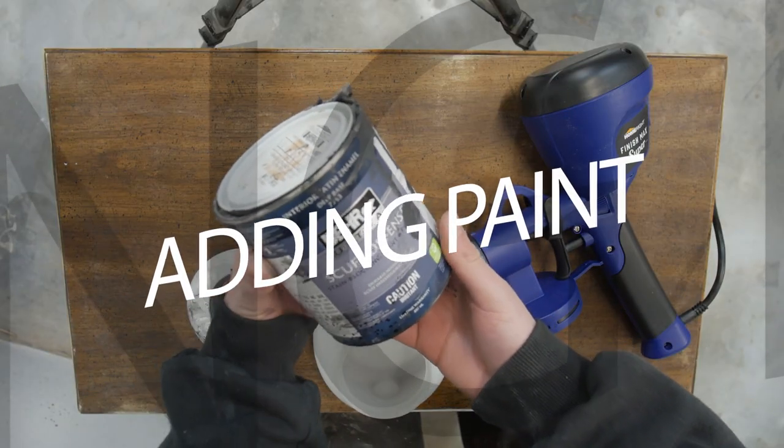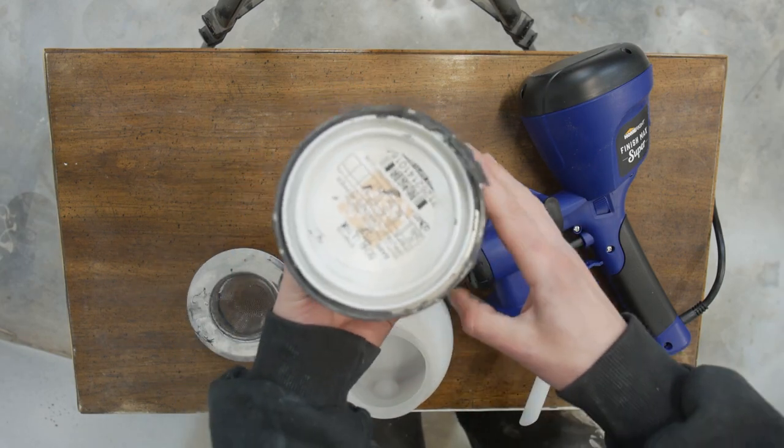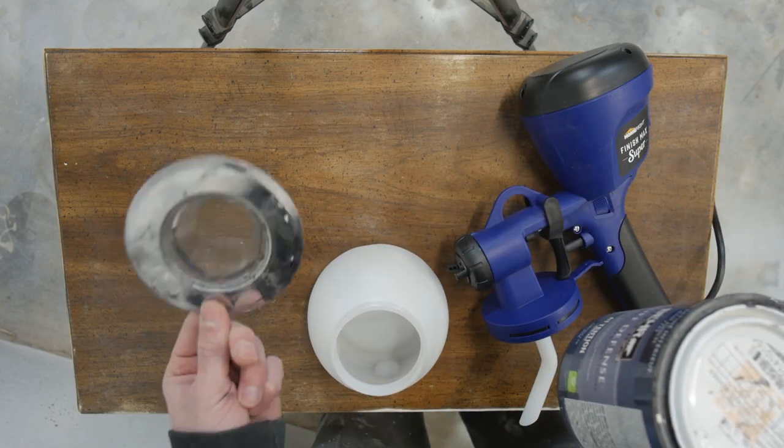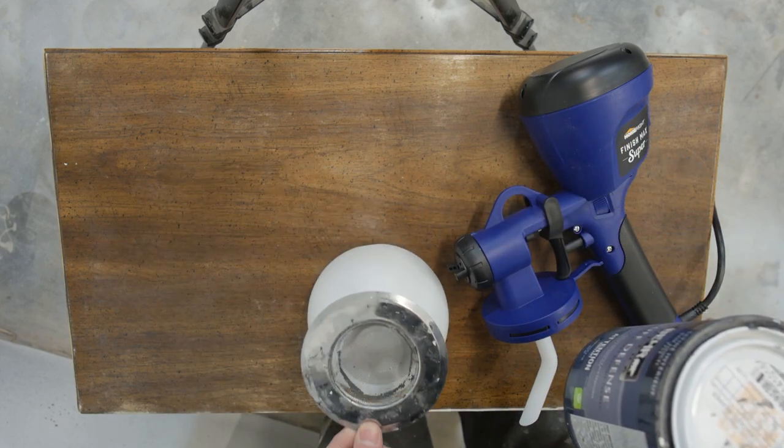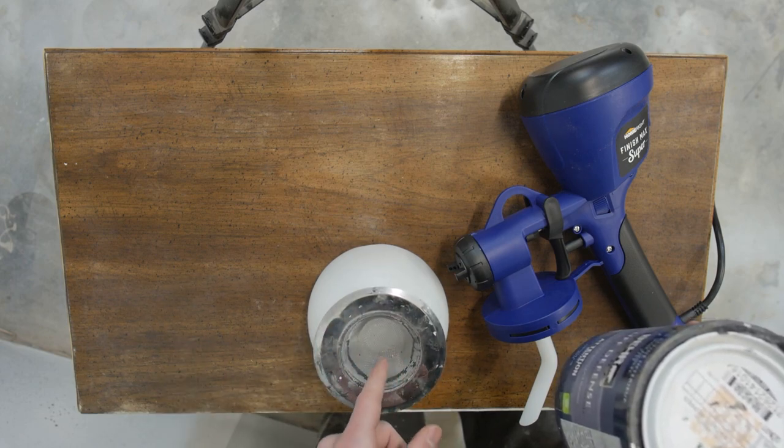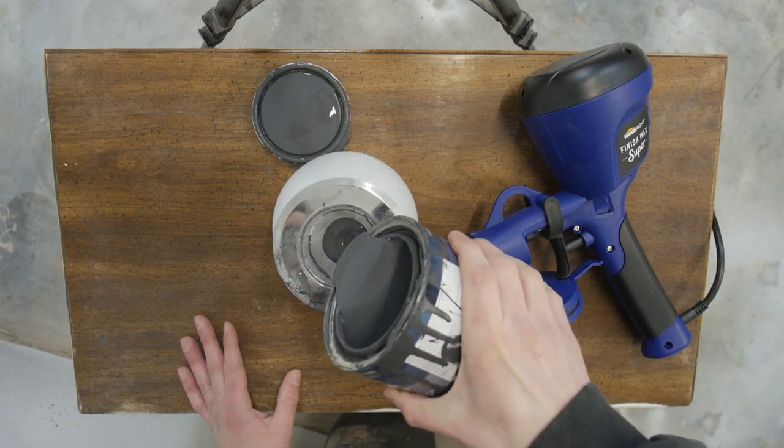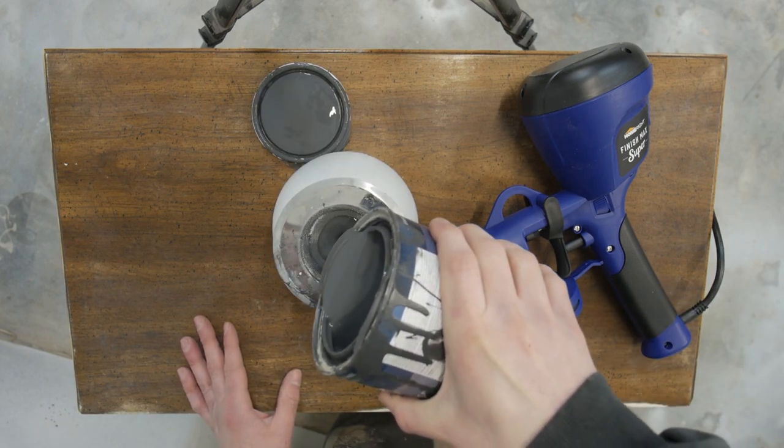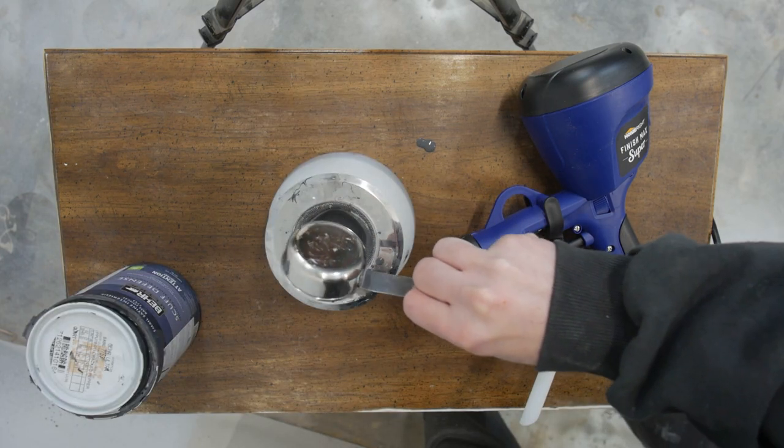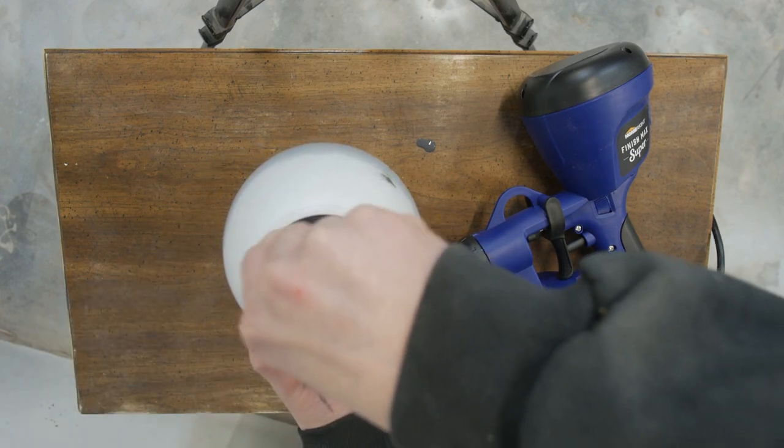I'm using some Bear Scuff Defense paint. I had this left over from a recent project. We're just going to dump this right into the paint holder. But what we need to do is use a strainer. I got this piece at the dollar store. It's just a strainer for your sink, and it strains paint perfectly. After pouring my paint in, I add about 10% water. Then I make sure to stir for at least one minute.